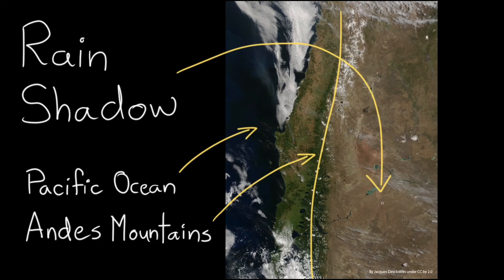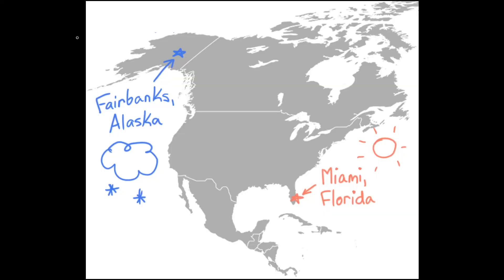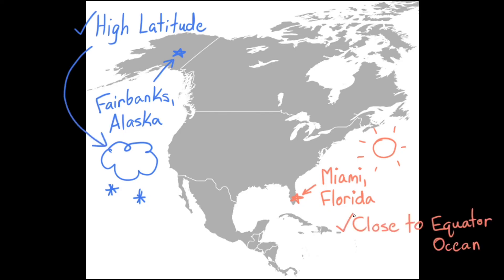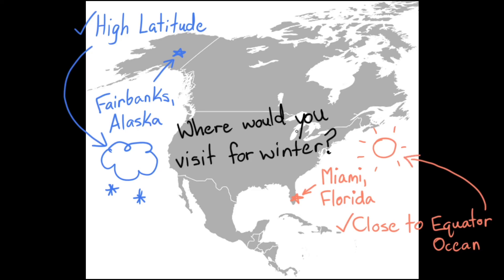As you can see, regional climates can get pretty complicated when you consider all of the factors that can go into them. Depending on the exact region, one factor may be more responsible for the local climate than the others, like how the presence of the Andes mountains contributes to the rain shadow climate beyond them. Let's look back at our two very different cities: Fairbanks is at a very high northern latitude, which helps explain why it's so freezing in the winter, while Miami is much closer to the equator and near an ocean, so it experiences a very warm and mild winter. Whether you prefer hanging out on sunny shorelines or exploring frosty winter wonderlands, there's a regional climate somewhere in the world that you'd probably enjoy.